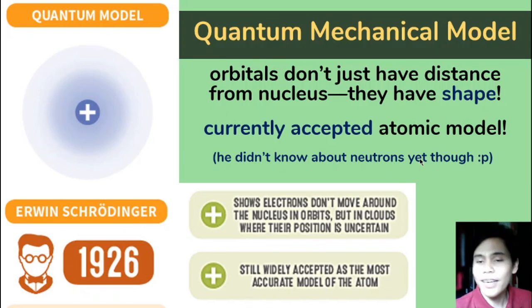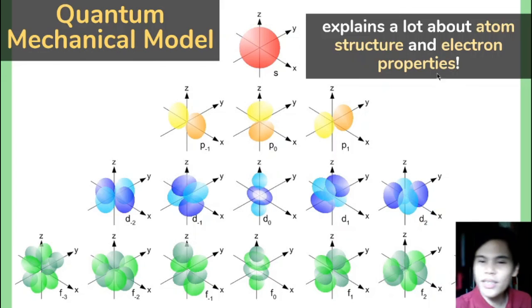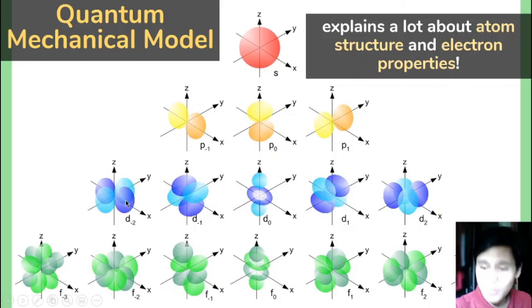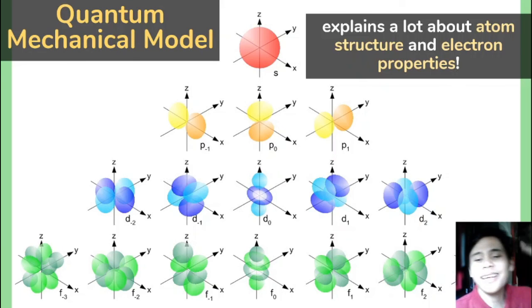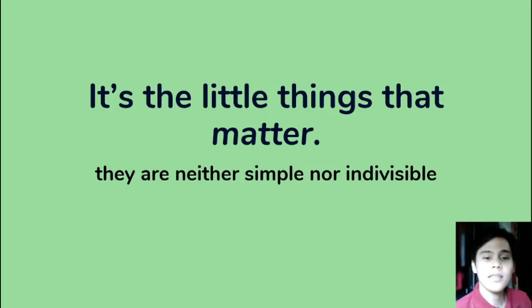We'll take up the neutron and how the atomic structure was figured out next time. The quantum mechanical model explains a lot about the atom's structure and properties of each electron. It's not just a circular or spherical shape — it can take on many shapes and sizes based on the energy and momentum of the electrons. We'll talk more about that when we discuss electron configuration. Key point: it's the little things that matter. It's neither simple nor indivisible. Sometimes in life you have to look at the little things because they're the things that make a difference. I'll see you guys next time.